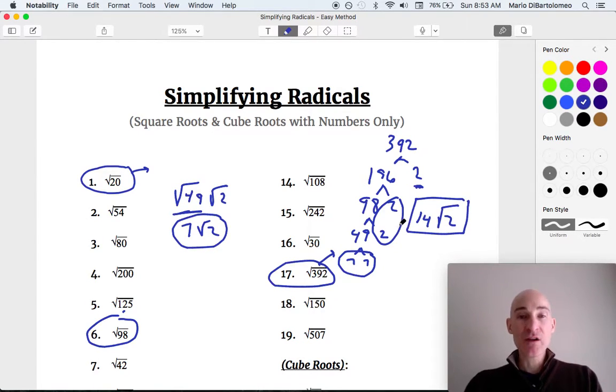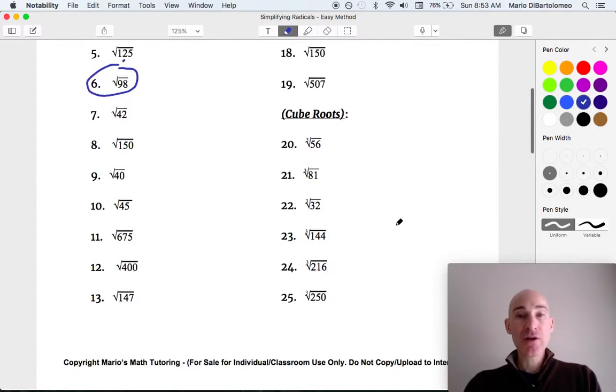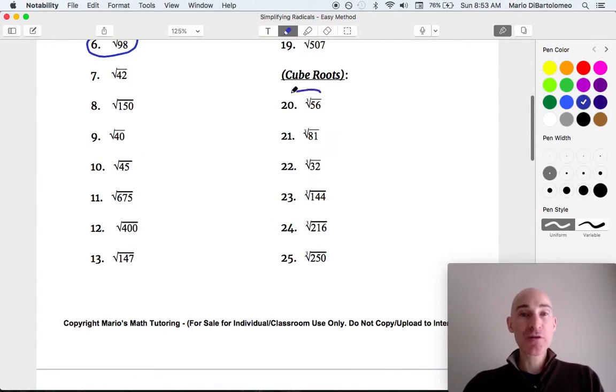So you're with me so far. Let's go ahead and cruise on down to some cube root examples. How about number 20? So we're taking the cube root of 56. And by the way, you know it's a cube root, because you see that little 3 right there? That's called the index. And that tells you, you know, you're looking for perfect cubes to factor out. So what are perfect cubes?